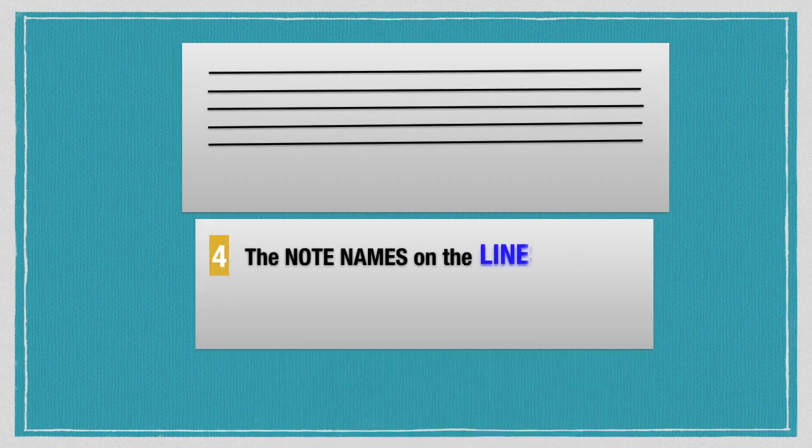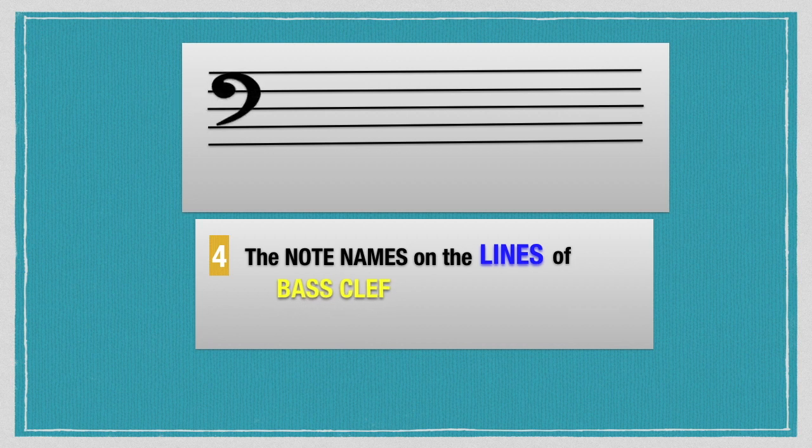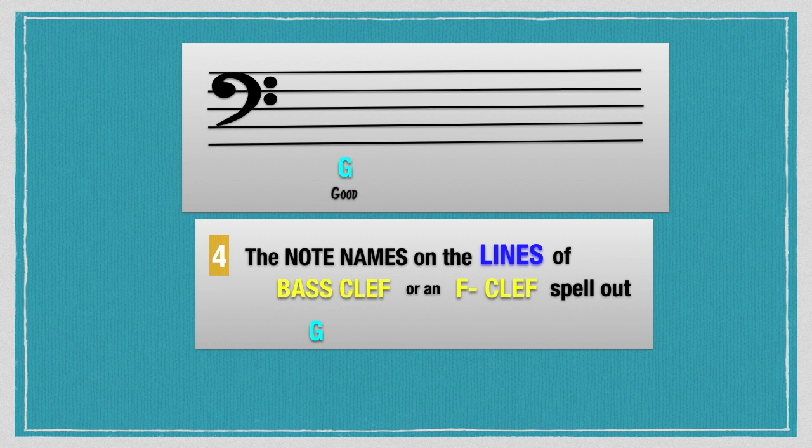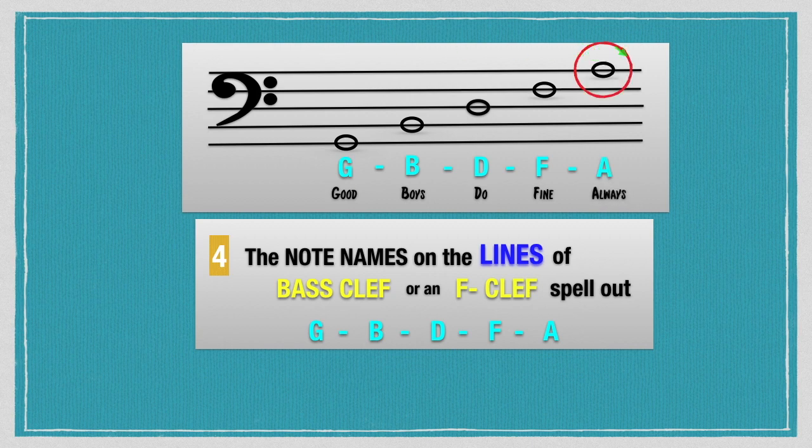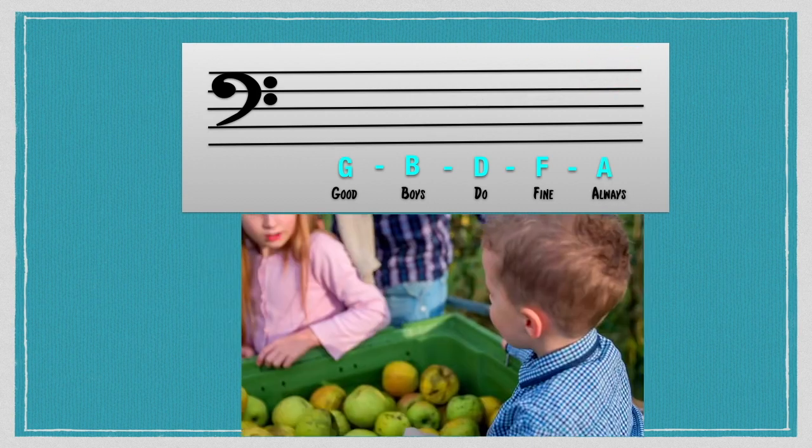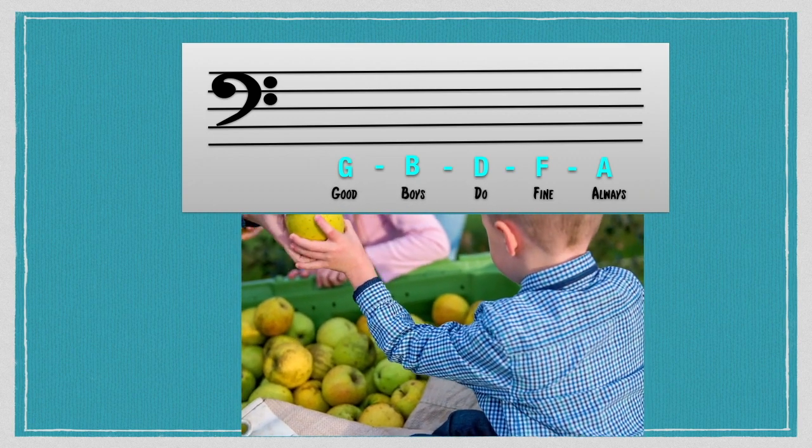The note names on the lines of bass clef or an F clef spell out as G stands for good on the first line, B stands for boys on line 2, D stands for do on line 3, F stands for fine on line 4, and A stands for always on line 5. Good boys do fine always.